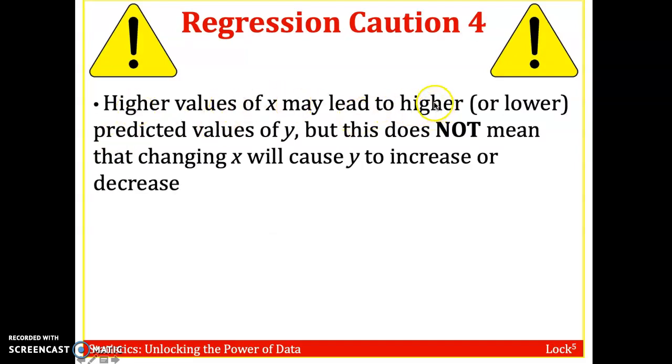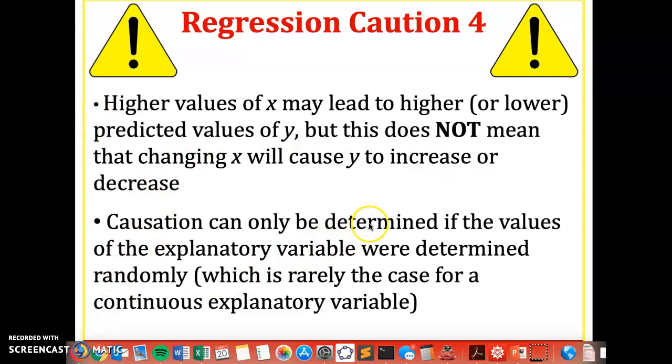Higher values of x may lead to higher or lower predicted values of y, but we cannot say that this means there is a causation. That changing x will cause y to increase or decrease. Again, this is a prediction. But going back to chapter 2.5, correlation, if you have a strong linear correlation, does absolutely not imply causation. Don't forget that causation can only be determined if the values of the explanatory variable were determined randomly. And this is really the case for continuous explanatory variables. So if we just have observational data, we can make predictions and we could use lines of best fit and study correlation, but we cannot directly lead to causation with purely observational data. We need to have an experiment with the response variable being randomized. Otherwise we cannot imply causation.